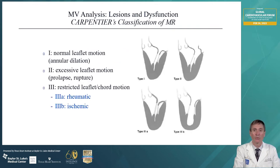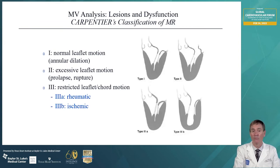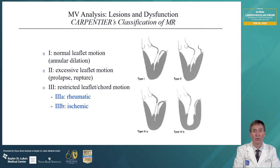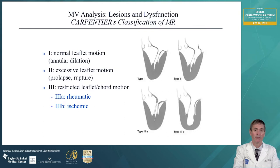Carpentier classified mitral regurgitation into one of three different types. Type one: normal leaflet motion, where you have dilation of the annulus pulling the leaflets apart but they move normally. Type two: excessive leaflet motion, which would be either prolapse or rupture of a cord or portion of a leaflet. Type three is restricted leaflet or cord motion — 3A with rheumatic disease, and 3B is ischemic disease where the back portion of the heart doesn't work well, the inferior wall, and the posterior leaflet is stiff.